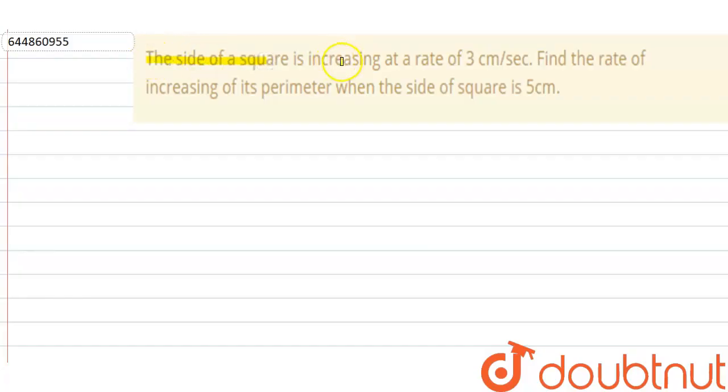The side of a square is increasing at the rate of 3 centimeter per second. Find the rate of increasing of its perimeter when the side of a square is about 5 centimeter. Now see, the rate of side, the increasing rate of side is given to us.